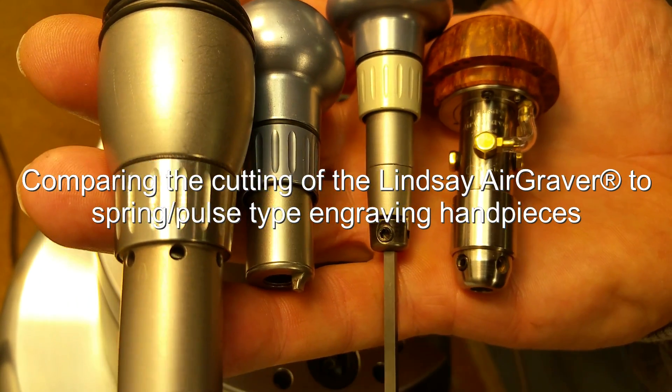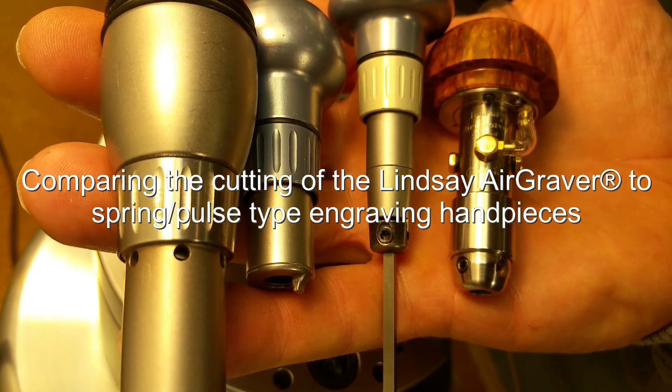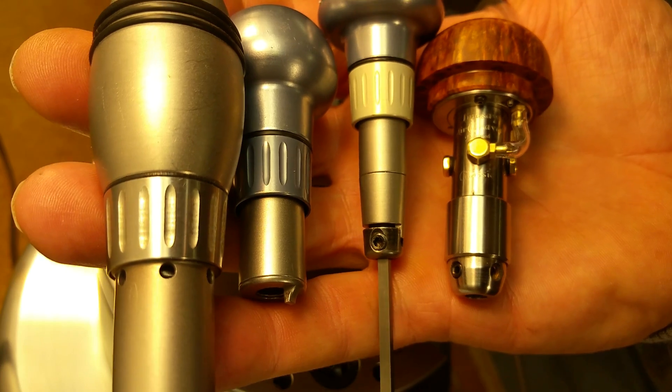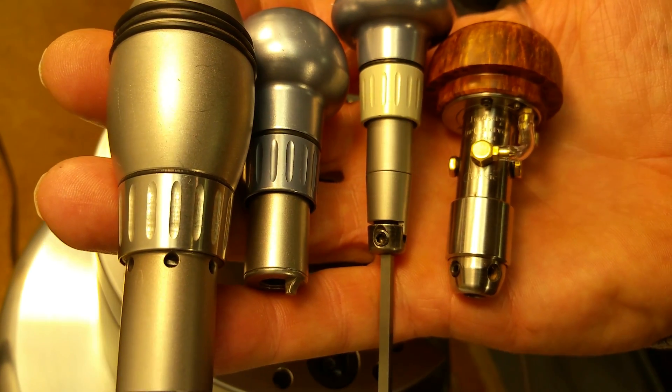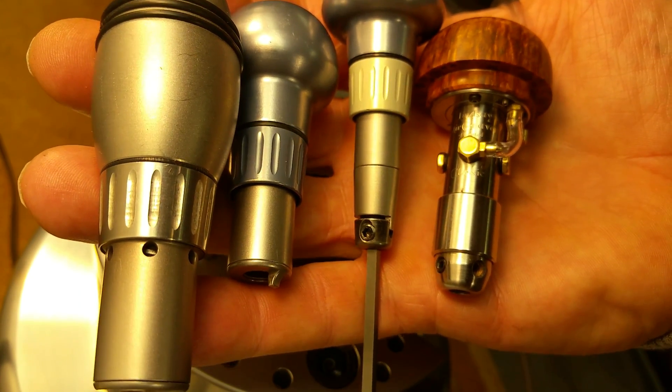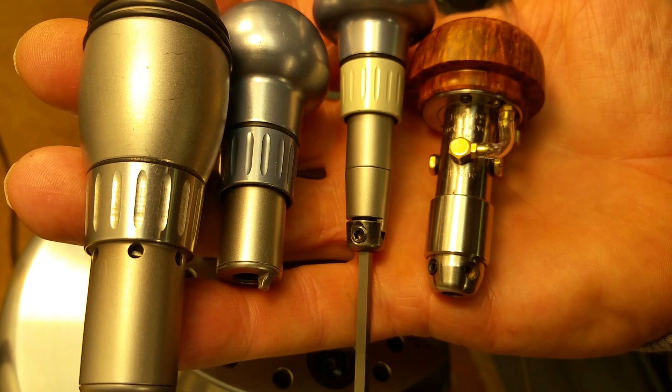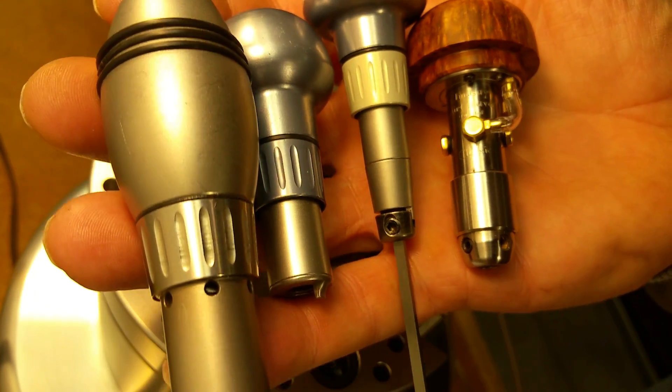Hi, this is Steve Lindsey. I received an email inquiry this morning asking how the air gravers cut in comparison to the pulse spring type handpieces like GRS and others make. I thought a video would help show the difference. I'll take some heavy and light cuts with each of the tools.